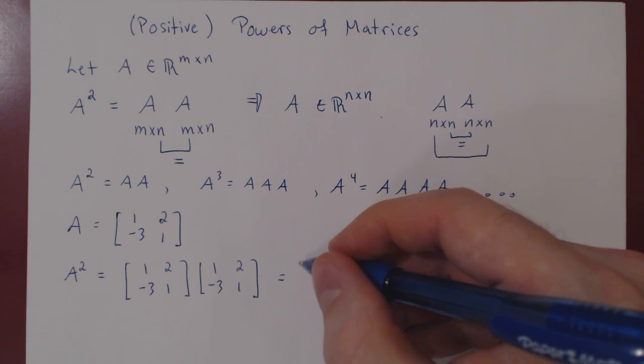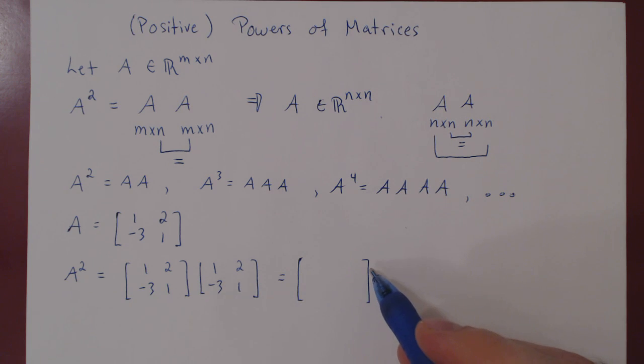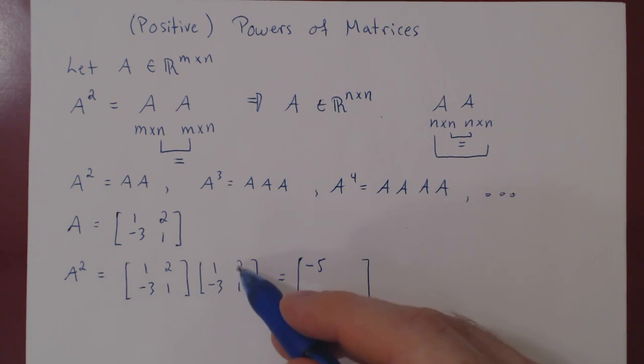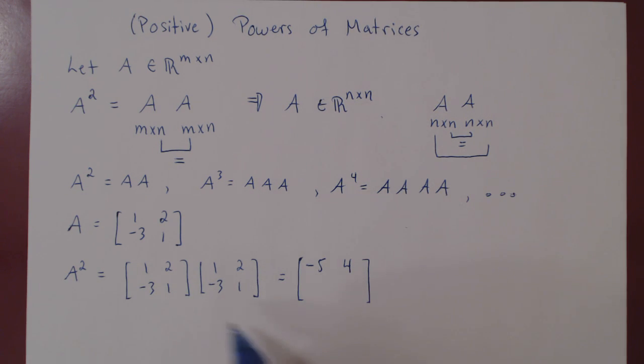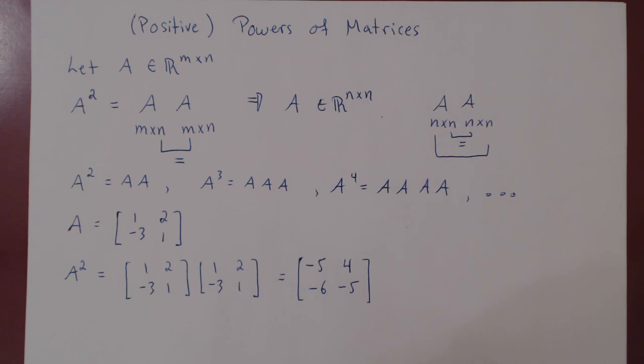So now we have A². So first row, fix the first row of A. So 1 times 1, 1, plus minus 6, negative 5. 1 times 2, 2, plus 2 times 1, 2, 2 plus 2 is 4. Second row, fix the second row of the first matrix. Negative 3, plus negative 3, negative 6. Negative 6, plus 1, negative 5. And so we have A squared.